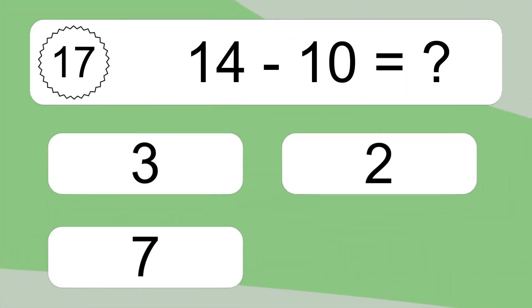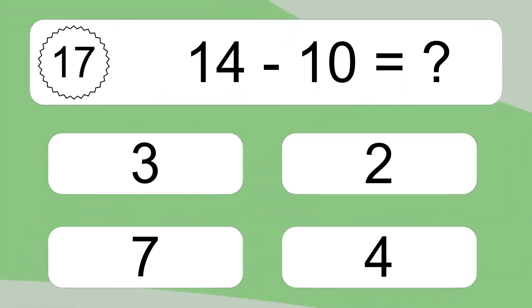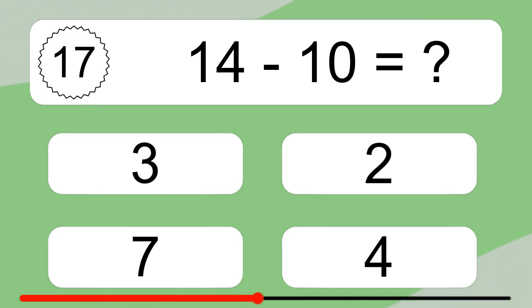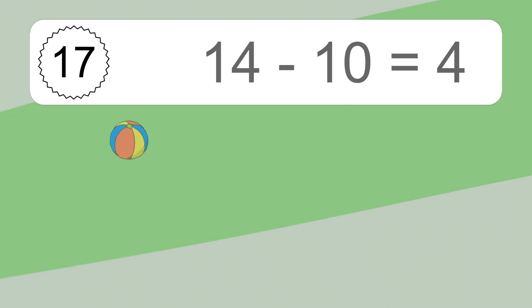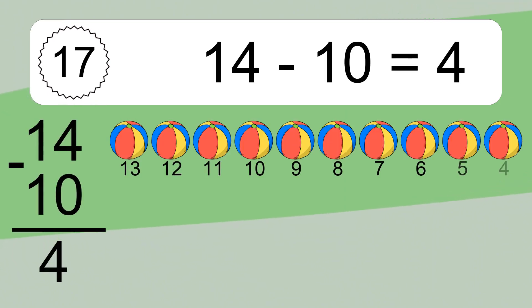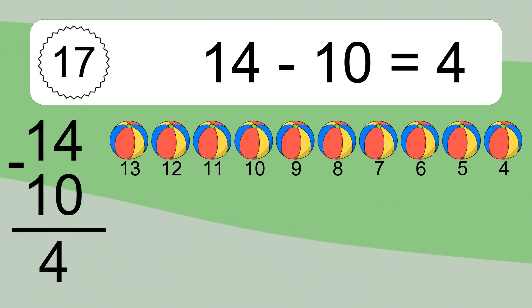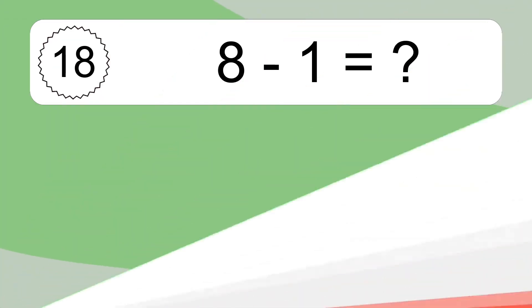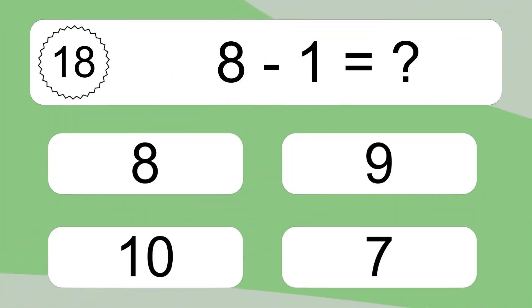14 minus 10 equals what? 14 minus 10 equals 4. Let's count it: 13, 12, 11, 10, 9, 8, 7, 6, 5, 4.